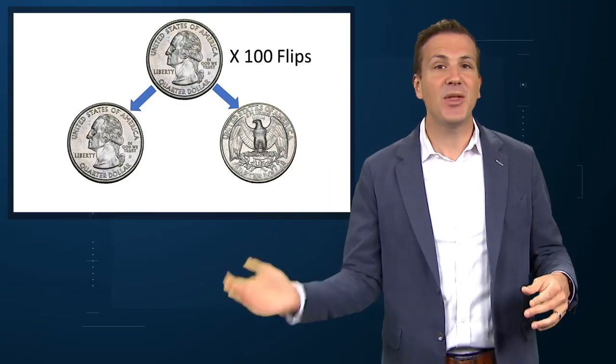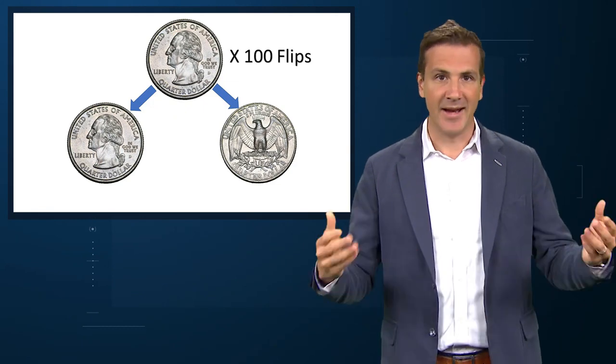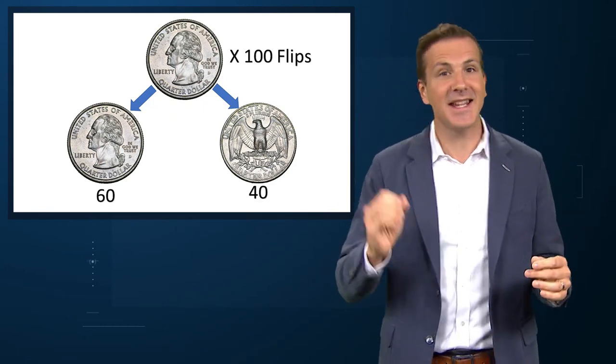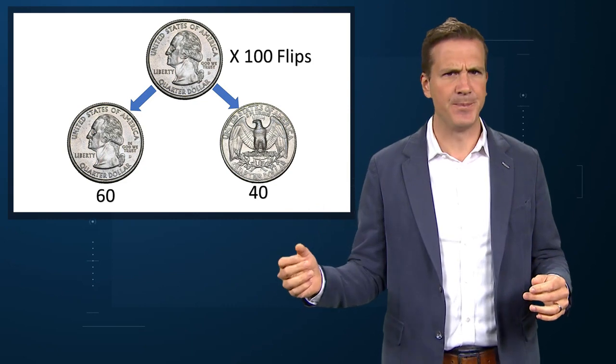Let me walk you through a quick example to show you what I mean. Imagine I find a coin on the street, a quarter, and I want to know if it's a fair coin. Maybe someone has messed with it, and I don't want adulterated currency jingling in my dungarees. So I do an experiment — I flip the coin 100 times.